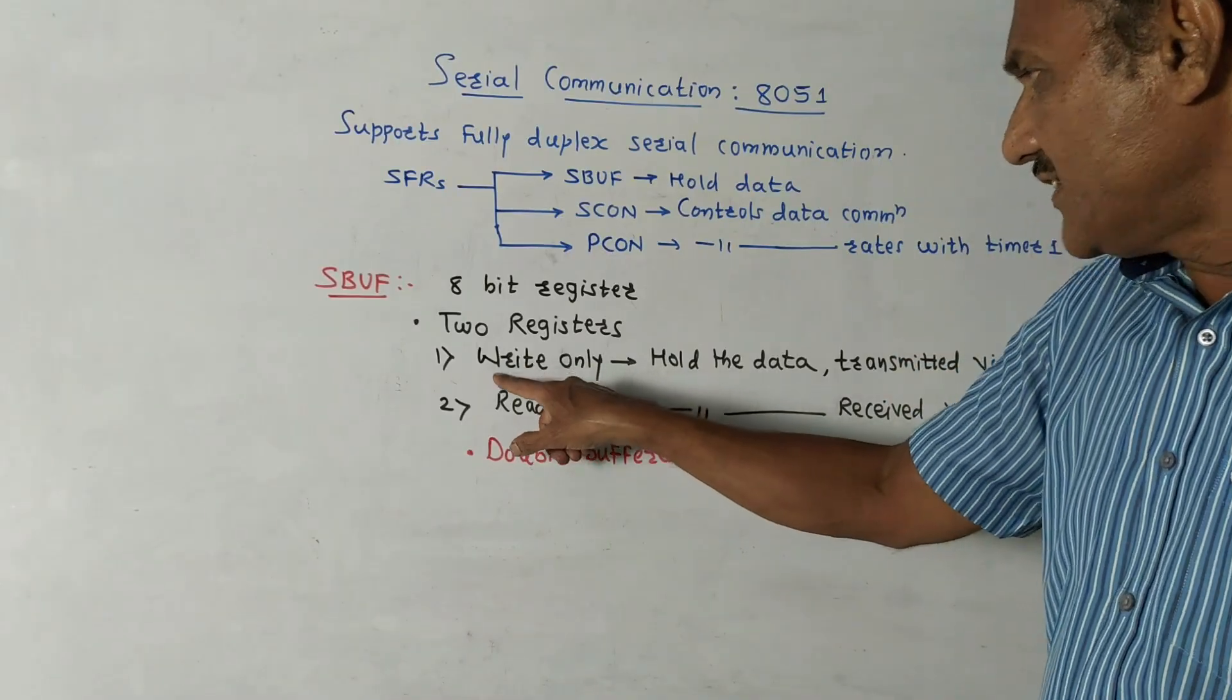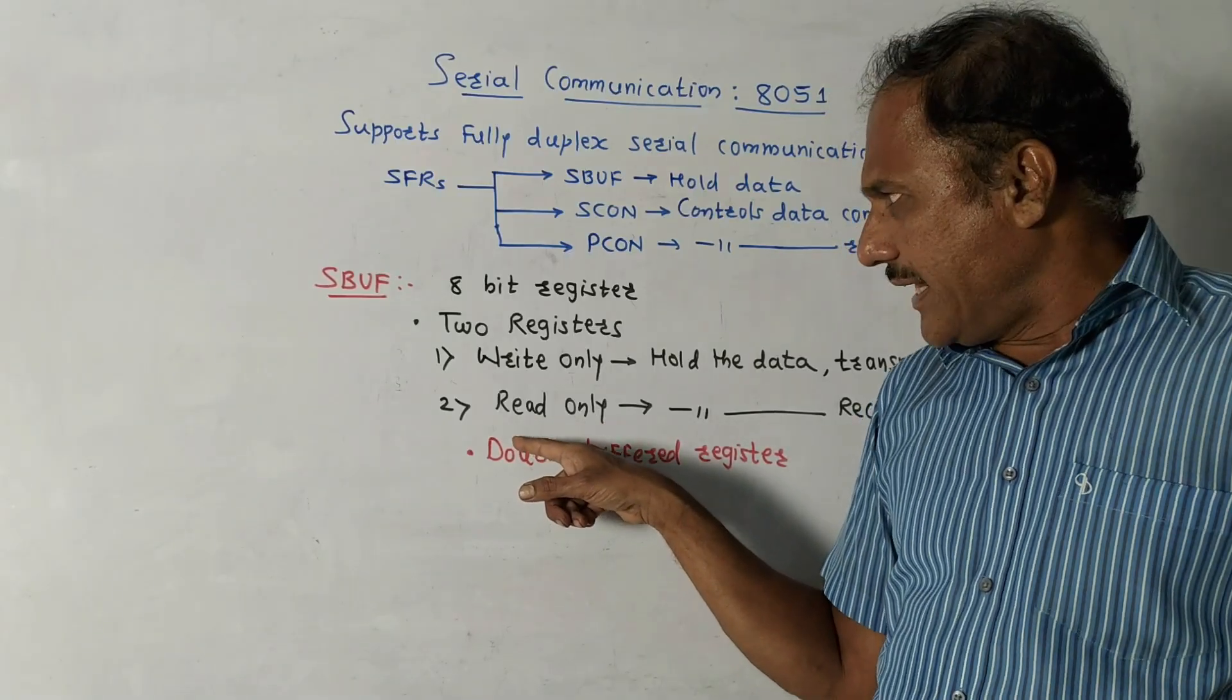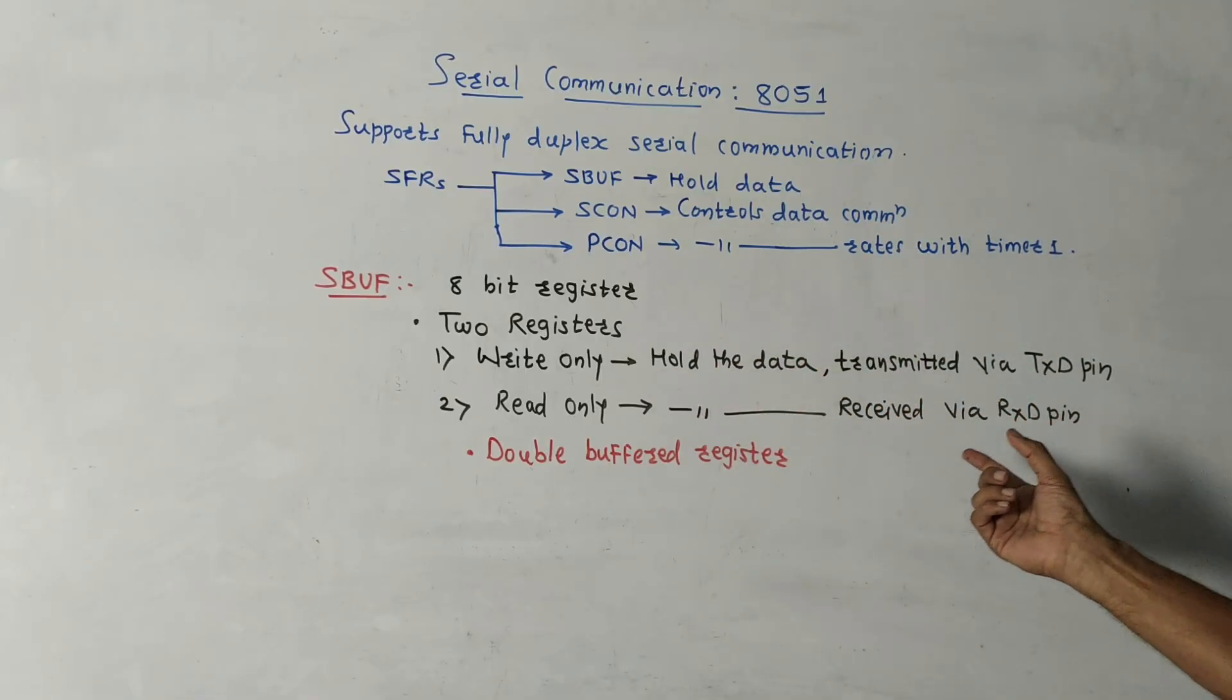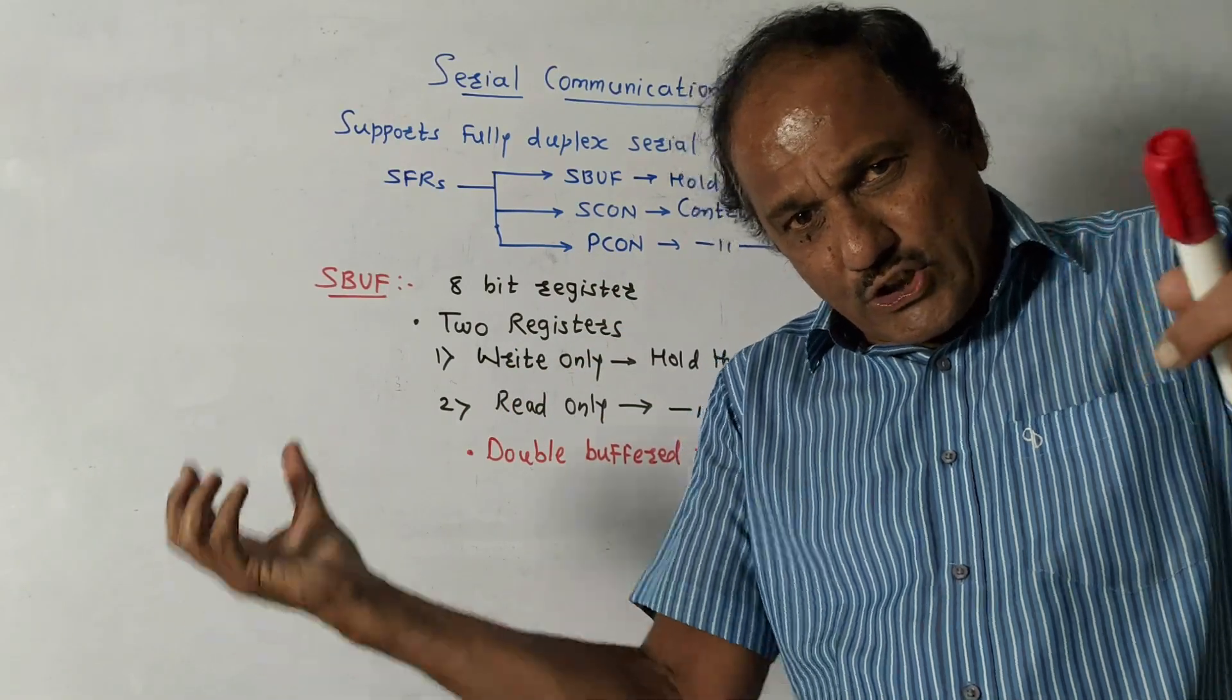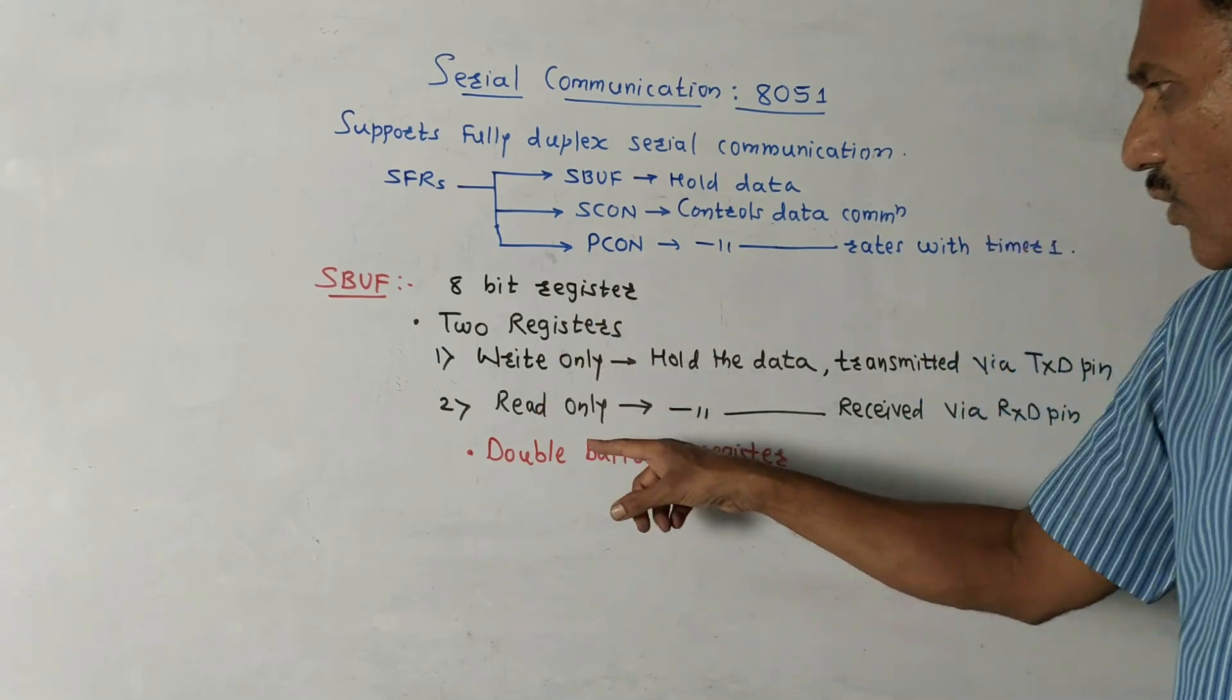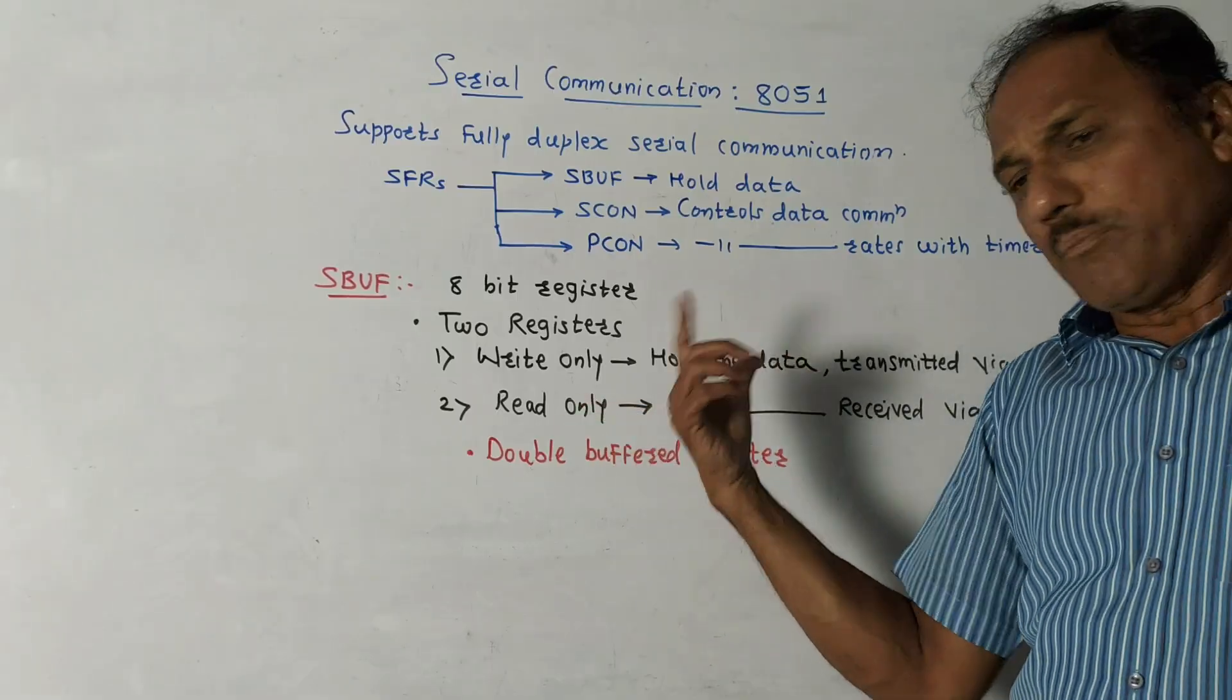On the contrary, the second register which is used in SBUF is read-only for read purposes. It holds the data received via RXD pin. RXD is the receiver pin used to receive signals. After receiving, you need to hold that data, so for that one register is used and it is only for read purpose. You cannot manipulate the things.